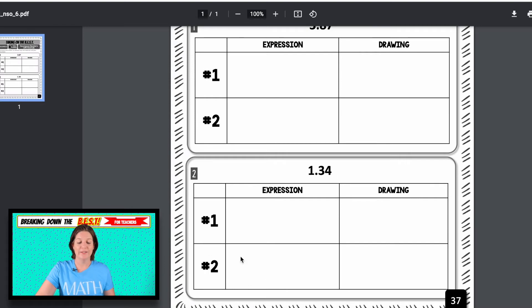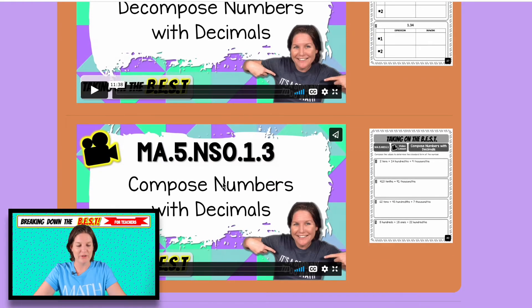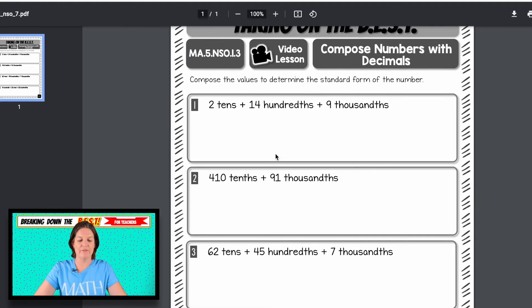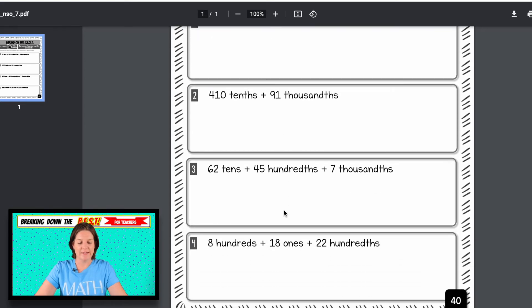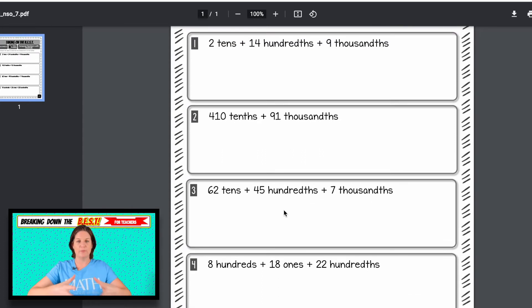When we get to this one, number two, when we get to one in 34 hundredths, I just want to give you a heads up that number two, it's going to take a little bit. Why? Because we're breaking them down into hundredths. They have to draw 134 hundredths in this one. Okay. And then we have composing numbers with decimals. So you can see here, we have the values, two tens plus 14 hundredths plus nine thousandths and et cetera. We've got four examples there of numbers that have been decomposed and we are putting them back together. We are composing them.